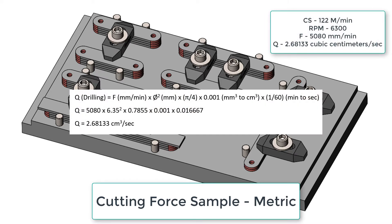In order to calculate the cutting force first we need to figure out the volume material removed. So for drilling we're going to multiply the feed rate times the diameter squared times pi over 4. Then we're going to multiply by 0.001 to convert our cubic millimeters to cubic centimeters and then once more we're going to multiply by 1 over 60 to convert the minutes to seconds.